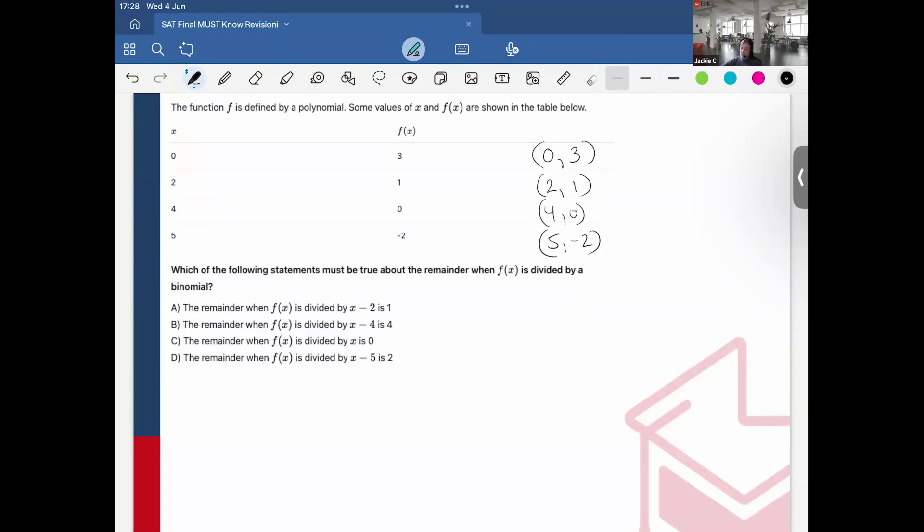Okay. So here, what is true, what should following statements be true of the remainder when f(x) is divided by a binomial? So remember, when we're divided by a binomial, which is all the ones that we've been previously seeing, and the only ones that are tested on SAT,